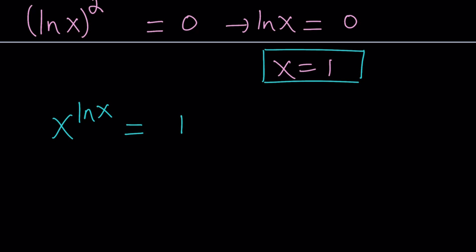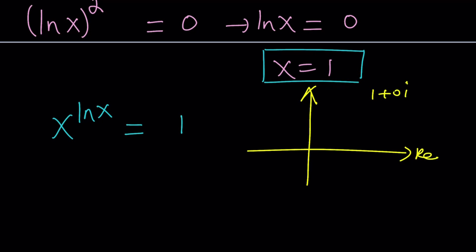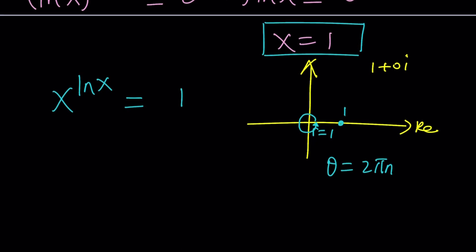If you think about the complex plane, 1 is going to be at (1, 0) or 1 plus 0i. It's on the real axis because it has no imaginary part, and it's 1 unit away from 0, so its modulus is 1. It's located on the positive real axis, so the angle it makes with the positive real axis is 0 radians, or 2π radians, or any multiple of 2π. We express that angle as 2πn. Any complex number can be written as r times e to the power iθ, thanks to Euler.